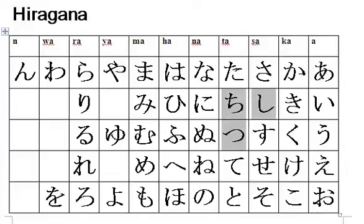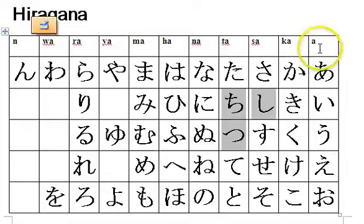In this video, I'd like to teach you what happens to hiragana letters when you add accents to them. There are two kinds of accents that change the sound of hiragana. One of them is called ten ten accent, and ten means a dot, so ten ten means adding two dots.